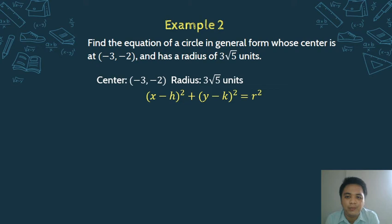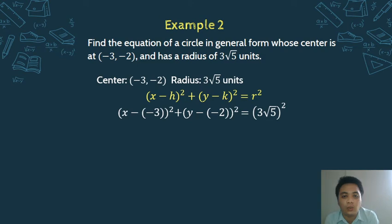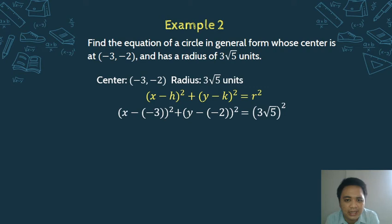Substitute all the given values. This becomes: (x minus negative 3) squared plus (y minus negative 2) squared equals (3√5) squared. Simplifying the signs: (x + 3)² plus (y + 2)² equals 45.